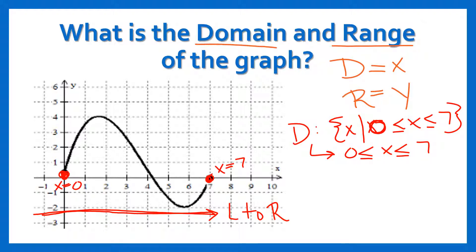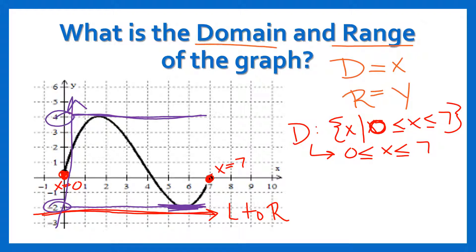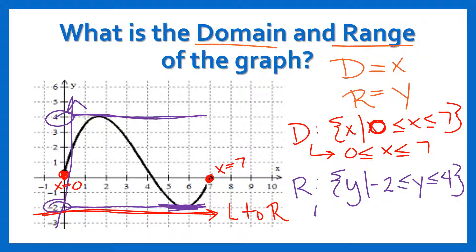Let's look for the range. Remember, range is like the y's, so we're going up and down looking at this graph. We want to find our smallest y-value, and as we move up the graph we want to find our greatest y-value. Here our smallest y-value is at negative two on the y-axis, and our greatest goes to four. So when we write that, we say 'y such that it's between negative two and four.' Sometimes you may see it written like this with negative two and four.